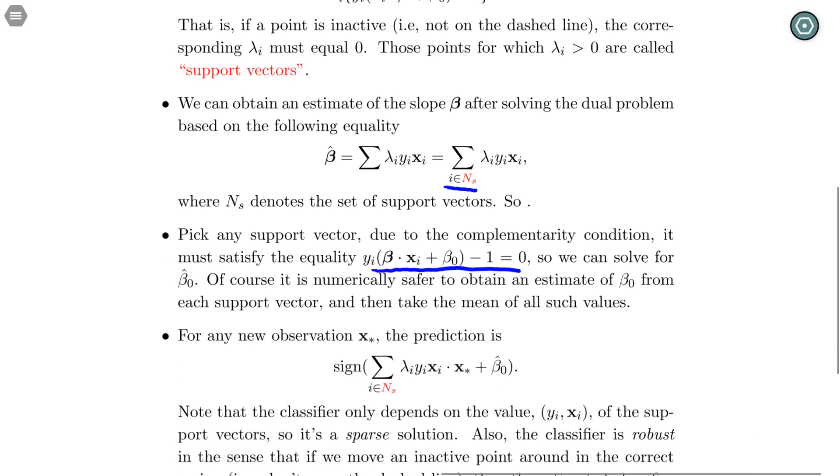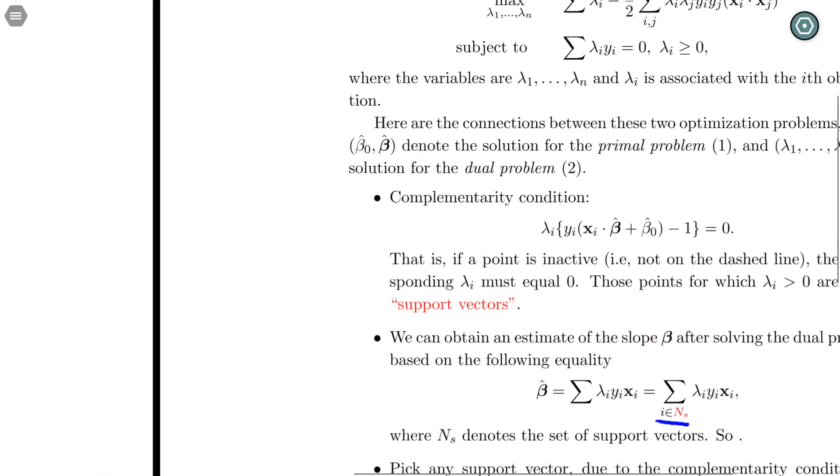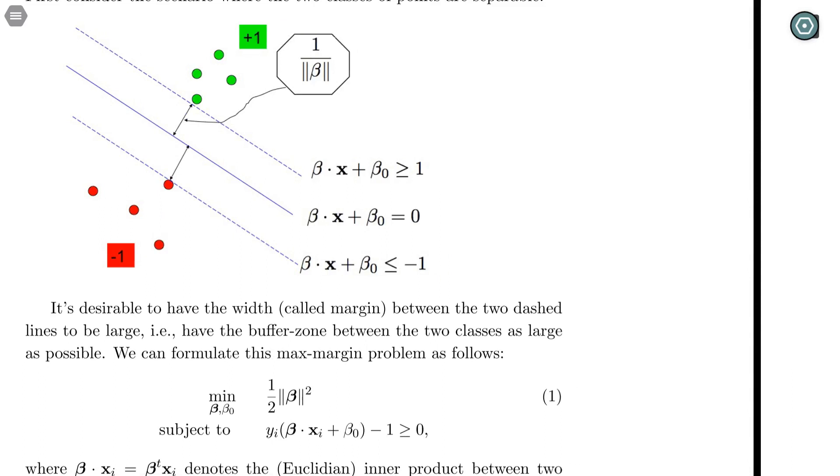Then how are we going to do prediction once we have learned the decision boundary? So the decision boundary corresponds to this solid line. And once we get a new point, we just plug in that point into this expression.